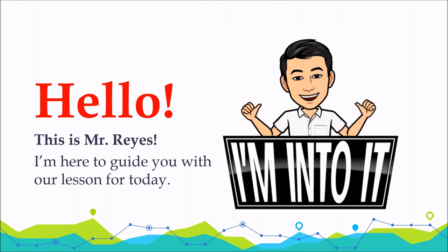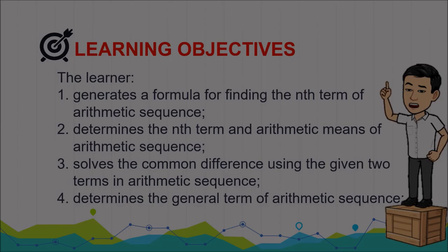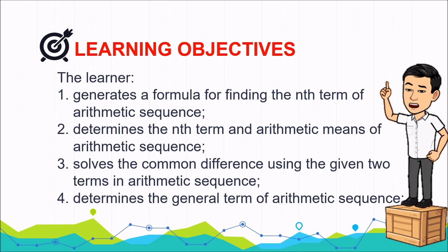Hello everyone, this is Mr. Reyes. Our learning objectives for today are: the learner generates a formula for finding the nth term of an arithmetic sequence, determines the nth term and arithmetic means of an arithmetic sequence, solves the common difference using two given terms, and determines the general term of an arithmetic sequence.